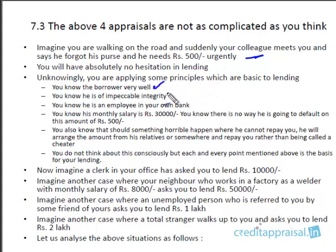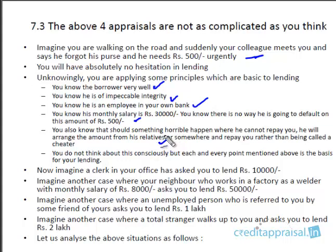One, you know the borrower very well. Two, he is of impeccable integrity — no way he is going to default on 500. Three, he is an employee in your own bank, so you can always tag this person. And you know the amount is so small relative to his salary of 30,000 that there is no way he will default. Should something terrible happen, he will arrange the money from someone related to you rather than be called a cheater. Each of these points is a relevant credit principle.